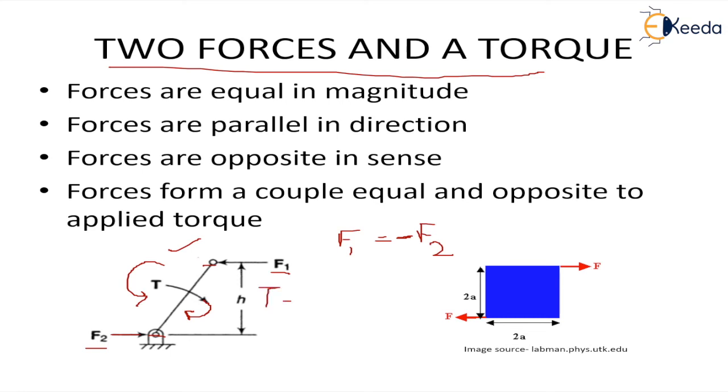this torque T should be equal to F1 times perpendicular distance H. Since F1 and F2 are equal, they will form the couple which will balance the torque.